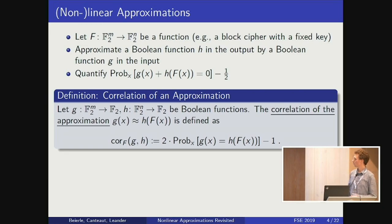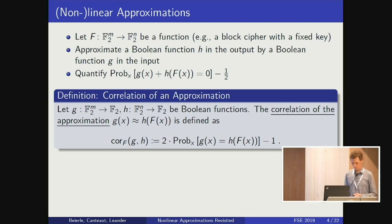The idea of these approximations is that we want to approximate a Boolean function h in the output by a Boolean function g in the input. We want to quantify the probability that g(x) equals h(f(x)) minus one half — how much it deviates from one half — and this is quantified in the notion of the correlation.